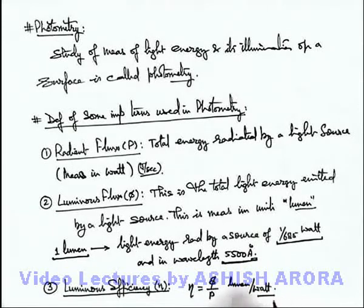That is the ratio of light energy emitted by a light source in lumen to the total energy radiated in all forms in watt. So this is the way how these terms are defined. A few more terms are there, we'll see in coming sections, but these are quite important related to source of light. You must always keep in mind.